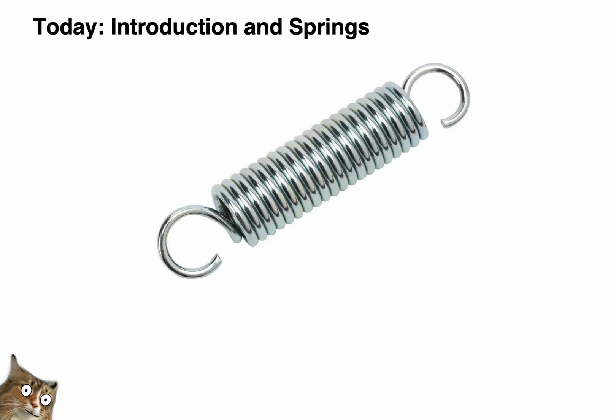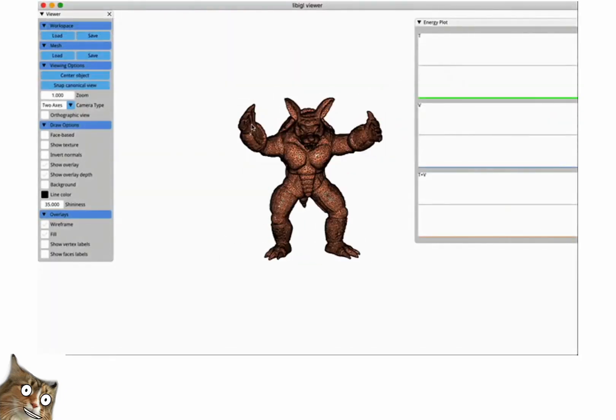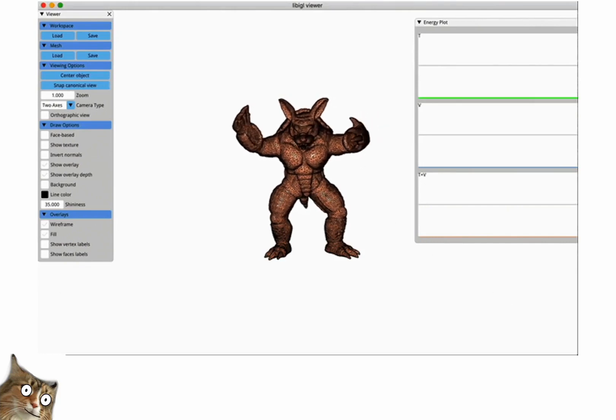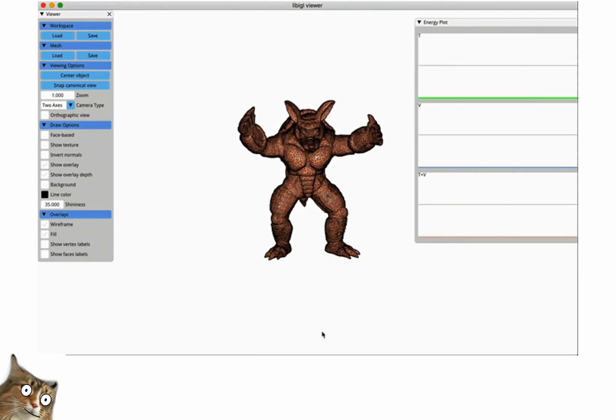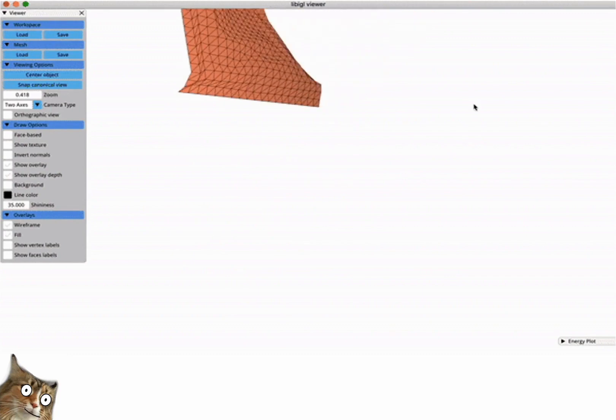To get started, we're going to begin with an introduction, or a review depending on your background, of some basic concepts of physics simulation using a simple mass spring as our model problem. We will relatively quickly see how these concepts can be applied to more complex geometries with more complex behaviors like this elasticity simulation of this armadillo, or the simulation of this hanging piece of cloth.